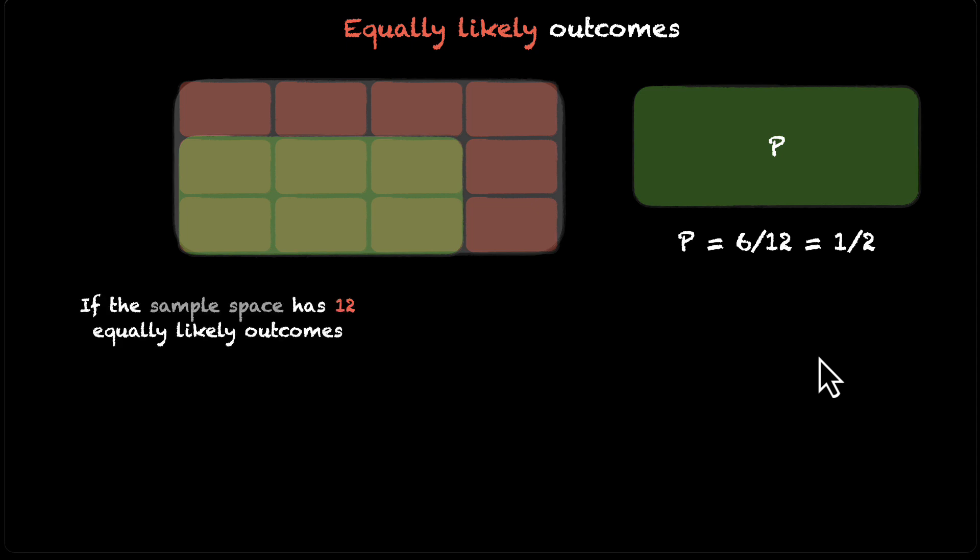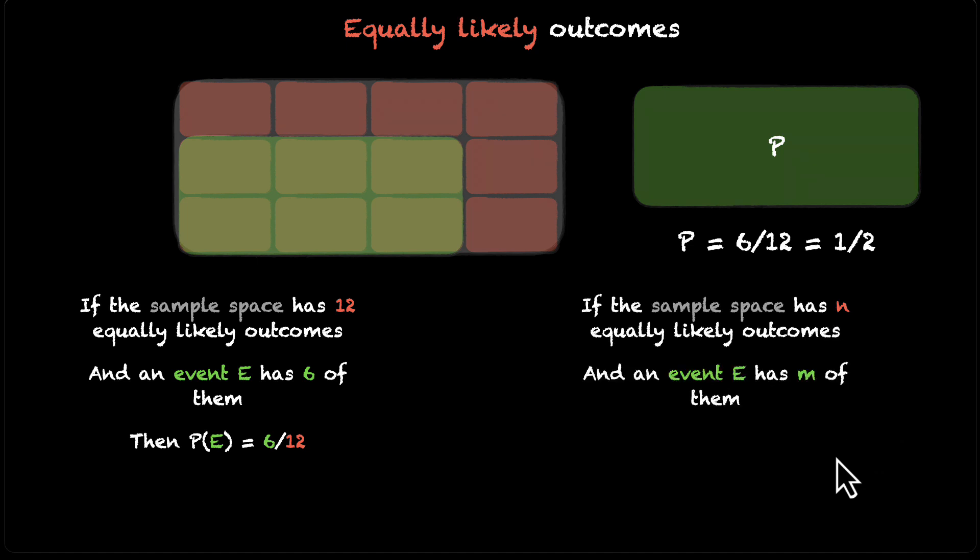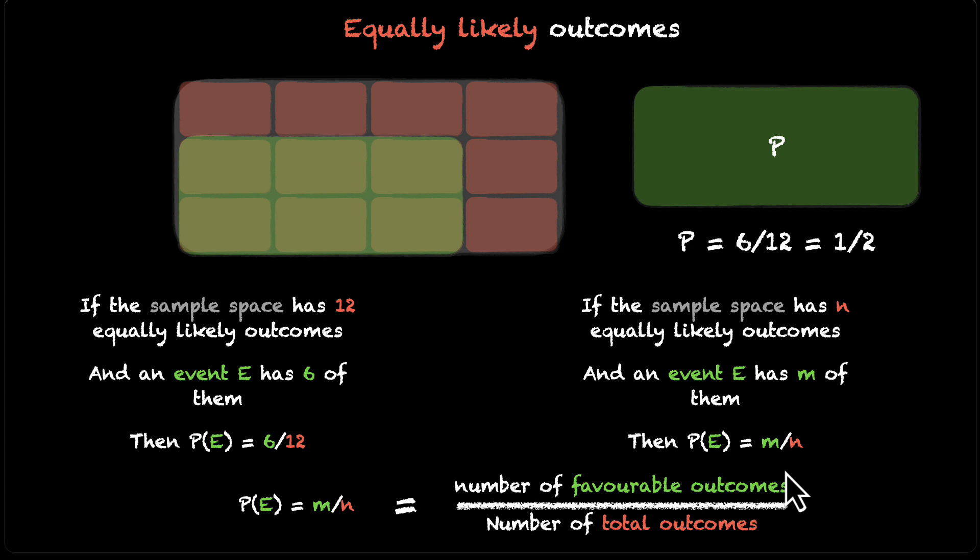If the sample space has 12 equally likely outcomes and an event E has 6 of them, the probability is 6 by 12. And now we can generalize this. If the sample space has n equally likely outcomes and an event E has m of them, then the probability is equal to m by n. So the probability of any event E is equal to m by n in the case of equally likely outcomes where m is the number of favorable outcomes and n is the number of total outcomes. You might have seen this written in one of your earlier textbooks. Maybe in your 7th or 8th grade. And this is where it comes from.